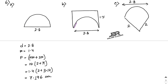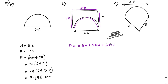For shape B, the perimeter includes the semicircular arc pi·r, plus two sides of 1.5 each, plus a straight edge of 2.8. So the perimeter equals 2.8 plus 1.5 times 2 plus pi·r. With pi equals 3.14 and r equals 1.4, pi·r equals 4.396. Therefore 2.8 plus 3 plus 4.396 equals 10.196 centimeters.